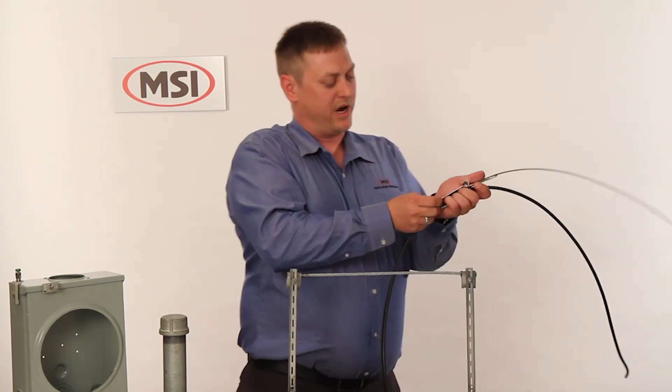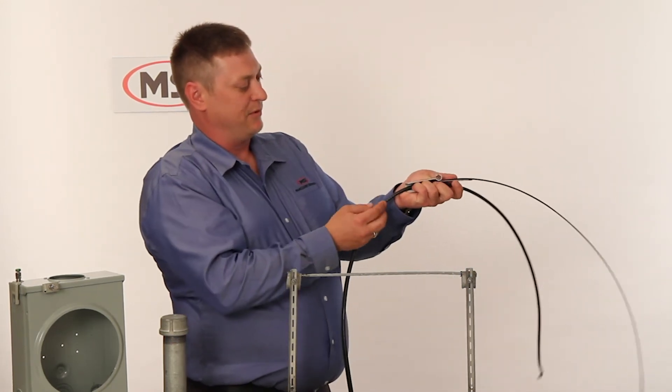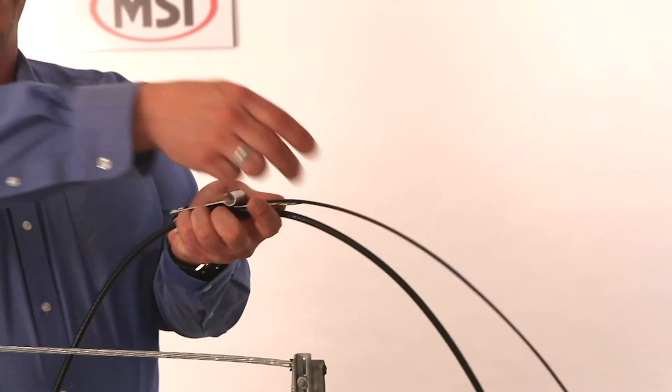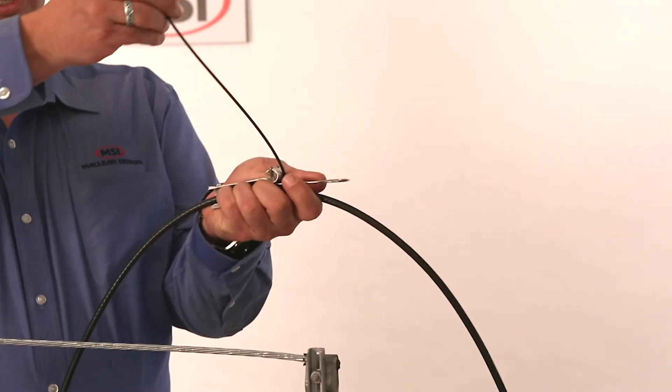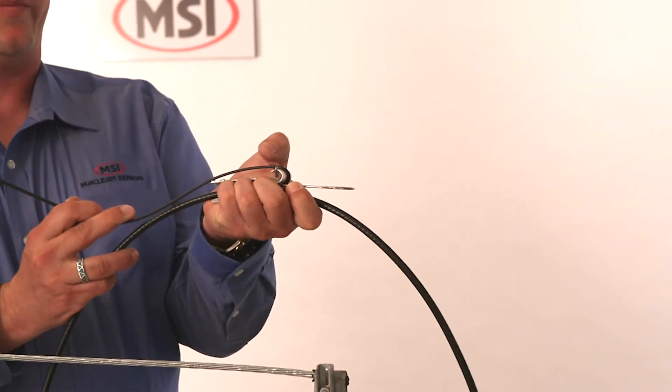Now when you're getting ready to install the cable, make sure the cable's all the way inside the body of the clamp. Take the messenger and fold it back over the bale attachment.